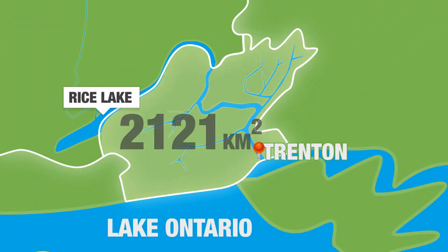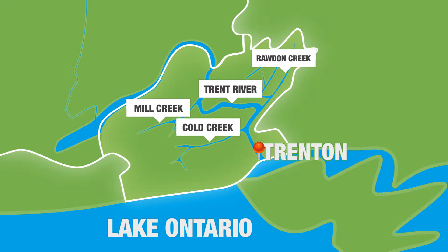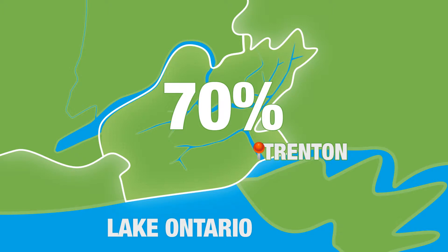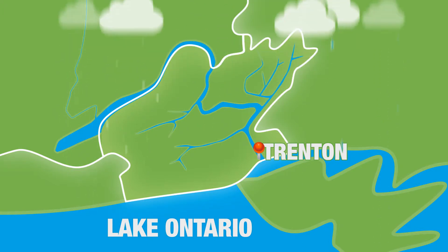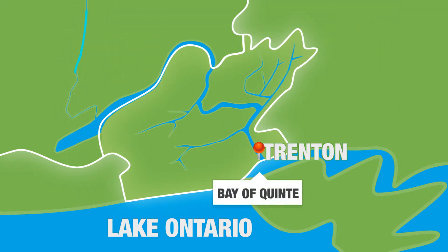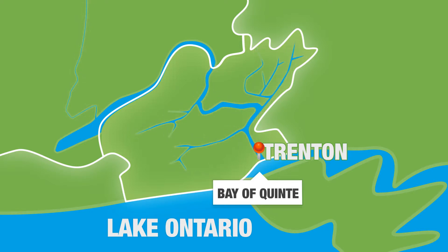It covers 2,121 square kilometers. The watershed includes the Trent River and its tributaries like Mill, Broaden, and Cold Creeks. Groundwater provides about 70% of the water, with the remainder coming from runoff from precipitation like rain and snow. All the water that is collected in the watershed flows to the Bay of Quinte and Lake Ontario through the Trent River and nearby smaller streams.